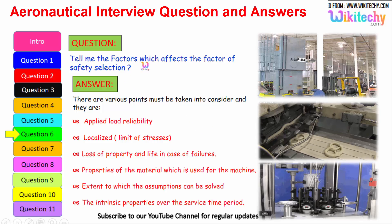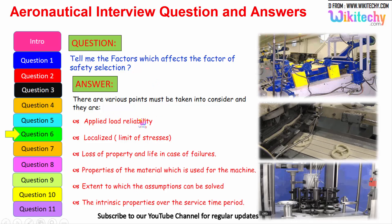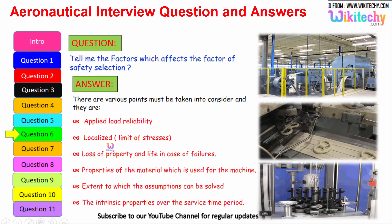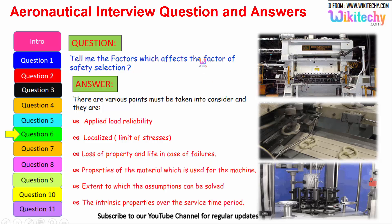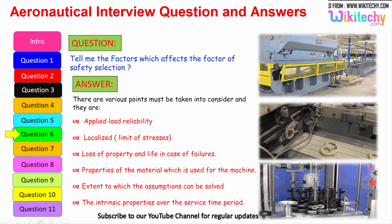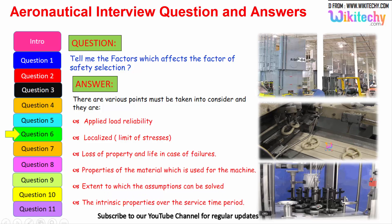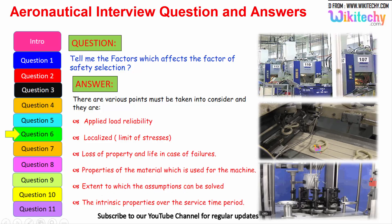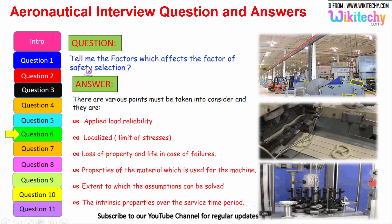Now let us see the factors which affect the selection of factor of safety. These include: the applied load reliability; limit of stresses that are localized; loss of property and life in case of failure; the properties of the material used for the machine; the extent to which assumptions can be verified (how much it will extend, compress, etc.); and the intrinsic property over the service time period — how long it will sustain everything.